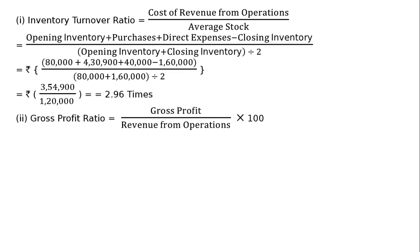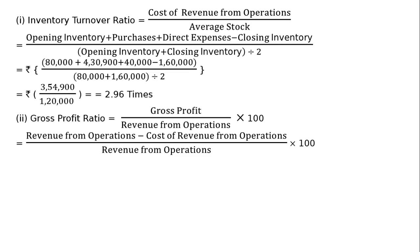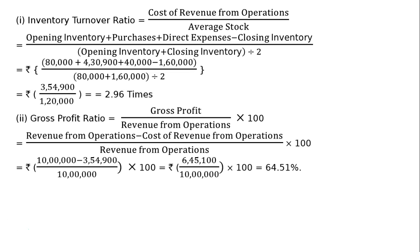Gross profit ratio equals revenue from operations minus cost of revenue from operations, giving gross profit, whole divided by revenue from operations into 100. That is equal to rupees 10,00,000 minus rupees 3,54,900 upon rupees 10,00,000 into 100, which equals rupees 6,45,100 upon rupees 10,00,000 into 100.